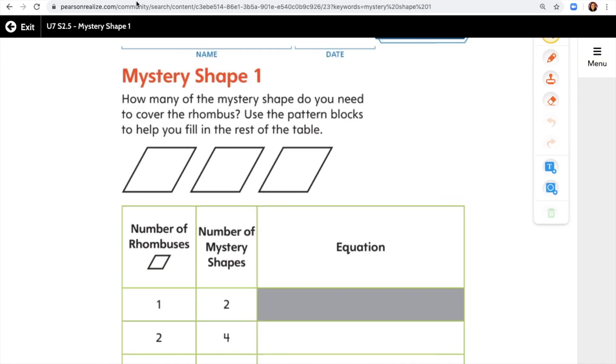We are going to read the directions and figure out what we'll need to do. Inside your math folder, Allison printed out a piece of paper that has lots of pattern blocks on them and you can cut them out and use them to cover the shapes inside your math booklet. So if that helps you, go ahead and do that now. If not, let's take a look at this problem and see if we can figure it out on our own. How many of the mystery shape do you need to cover the rhombus? Use the pattern blocks to help you fill in the rest of the table.